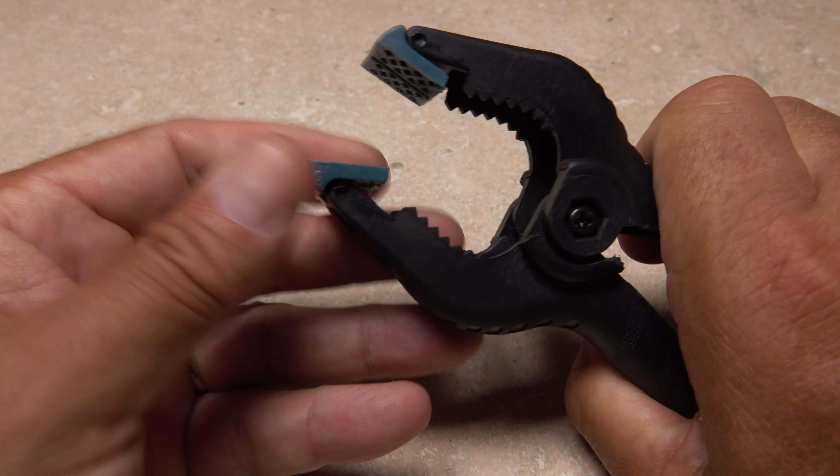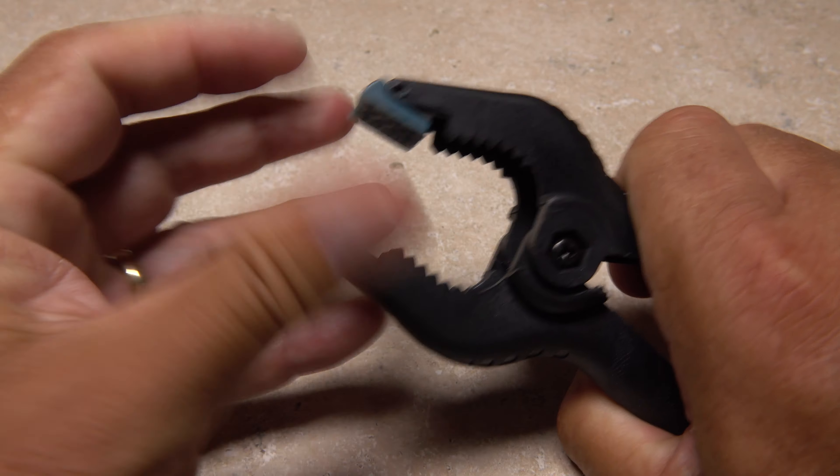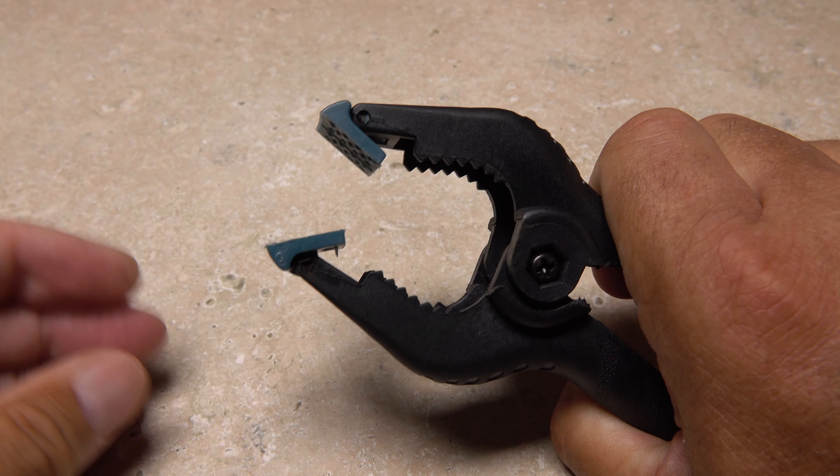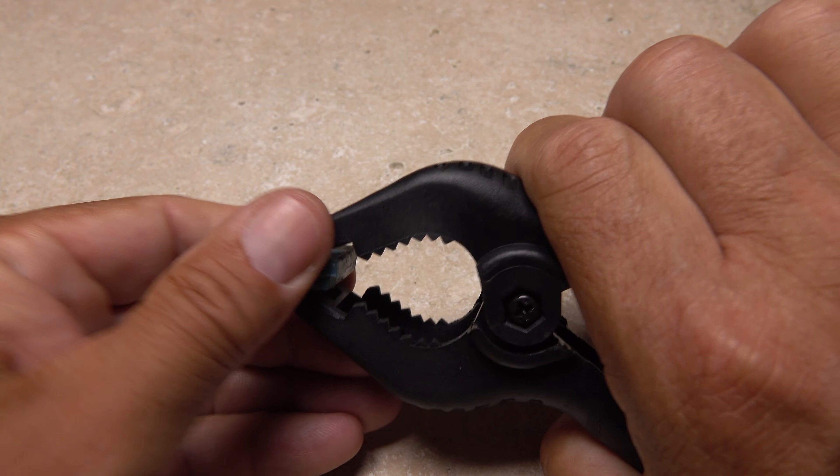The clamps are spring-loaded and have pivoting pads that are kind of a pain but do ensure a flat clamp no matter how thick whatever it is you're clamping.